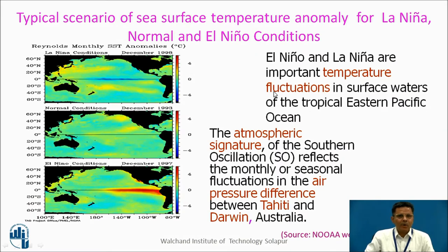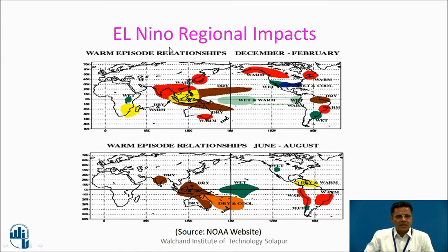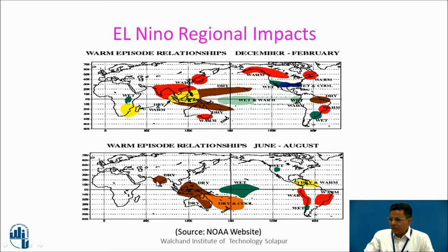El Niño and La Niña are important temperature fluctuations in surface waters of the tropical eastern Pacific Ocean. The atmospheric signature of the Southern Oscillation reflects the monthly or seasonal fluctuations in air pressure difference between Tahiti and Darwin, Australia. El Niño has regional impacts. For India, our period of monsoon is June to September. In warm episodes of El Niño, there is a reduction in rainfall over India, as well as dry situations in some regions, while wet situations occur in others.